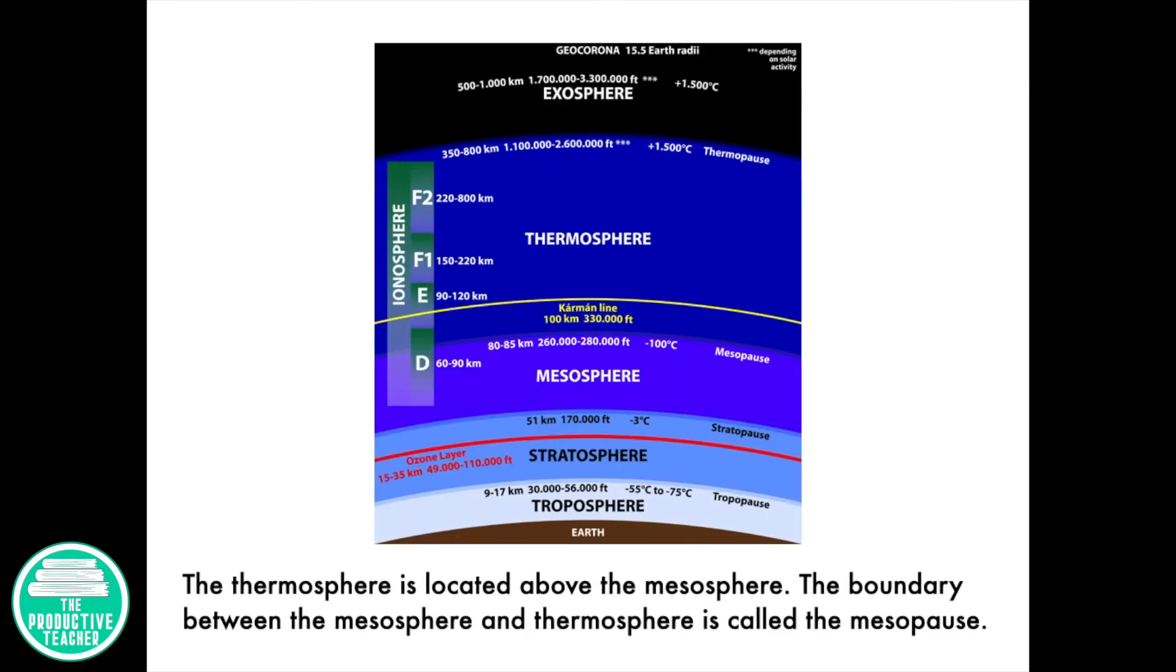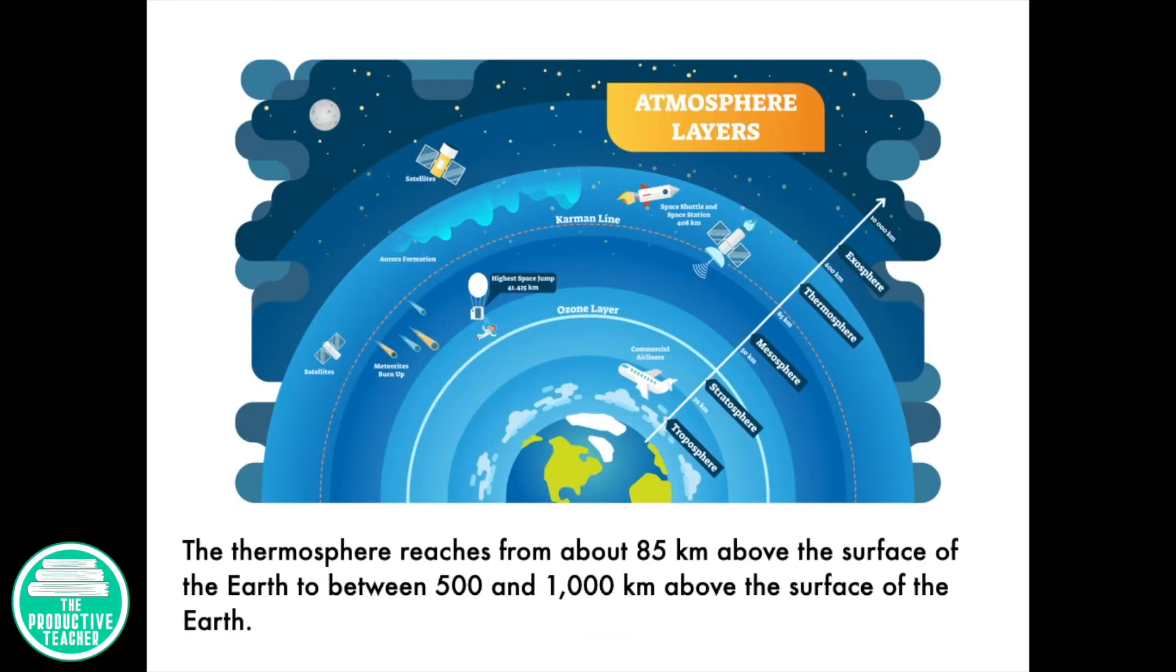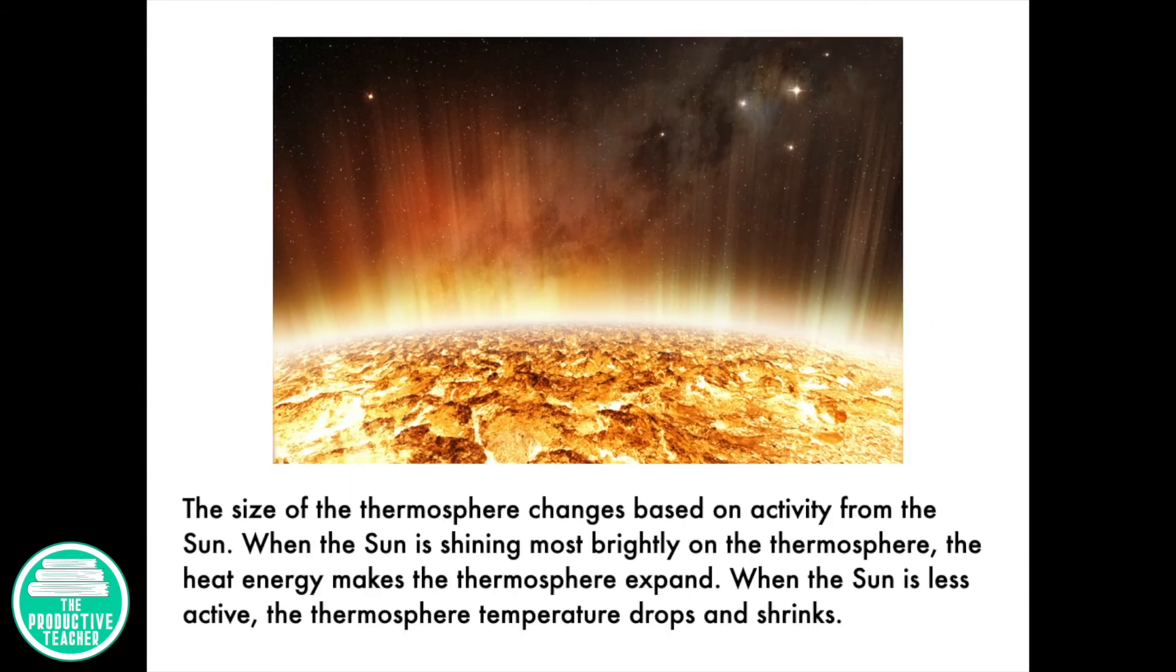The thermosphere is located above the mesosphere. The boundary between the mesosphere and thermosphere is called the mesopause. The thermosphere reaches from about 85 kilometers above the surface of the Earth to between 500 and 1,000 kilometers above the surface of the Earth. The size of the thermosphere changes based on activity from the sun.